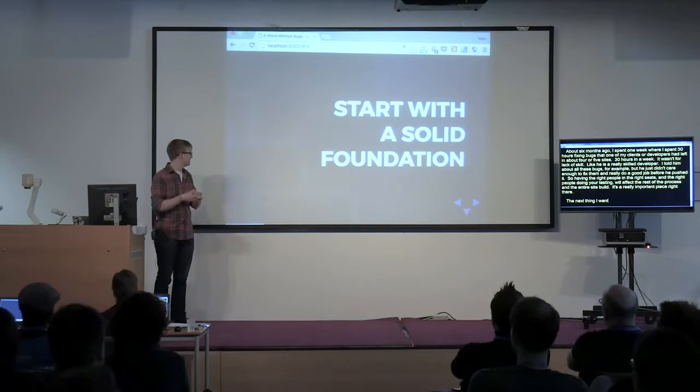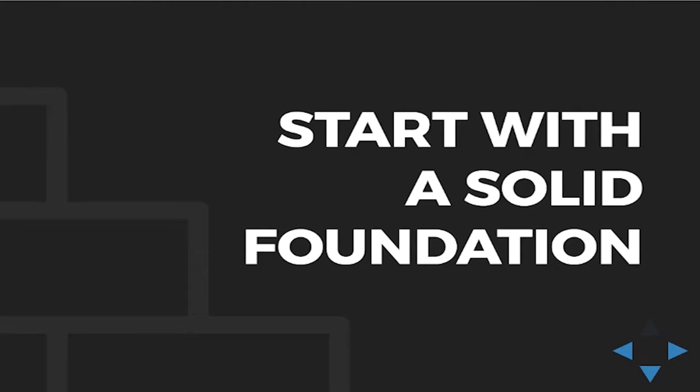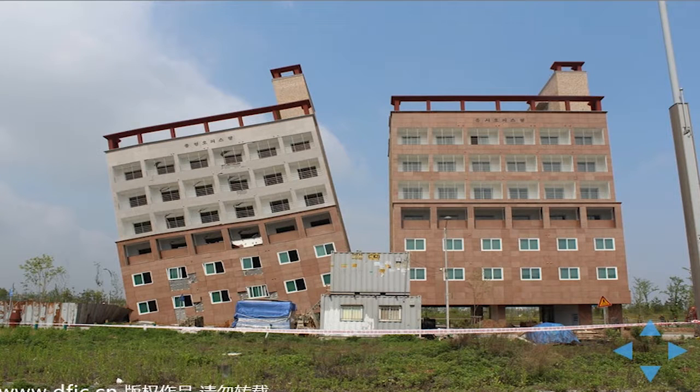The next thing is the foundation — the base architecture of the code and how you write things. When I took a step back and approached all of our testing and quality assurance, I noticed that any bug that showed up on a site would show up on that site and then all the concurrent sites. Which means our base frameworks, the libraries we were using, the way we were writing code — all of that was recreating these bugs across all these sites. So I approached that base architecture to find better ways of writing quality code.